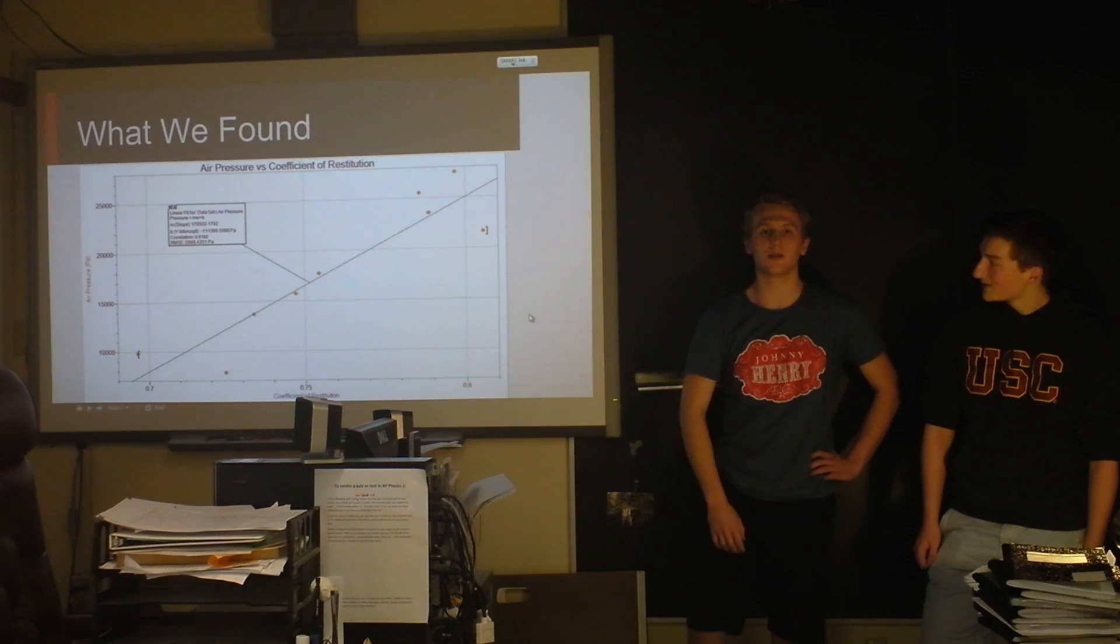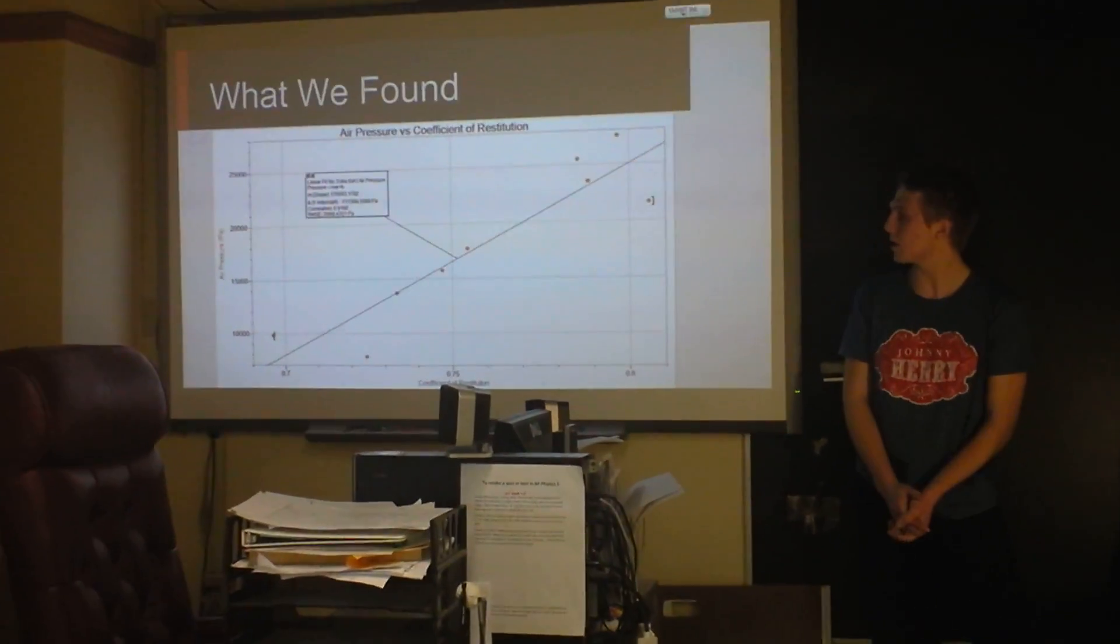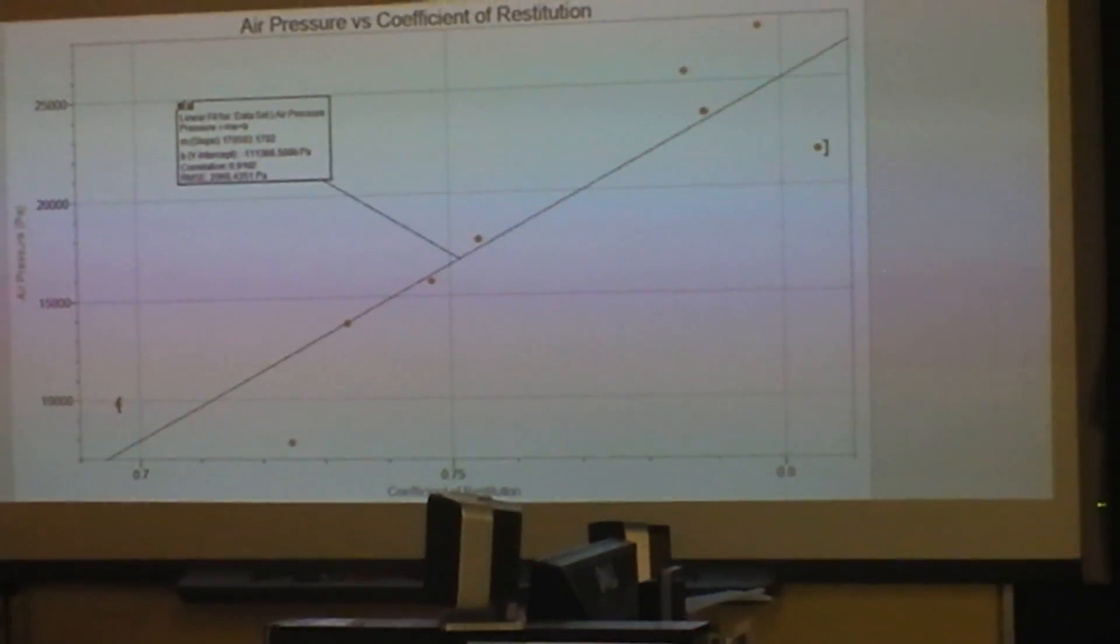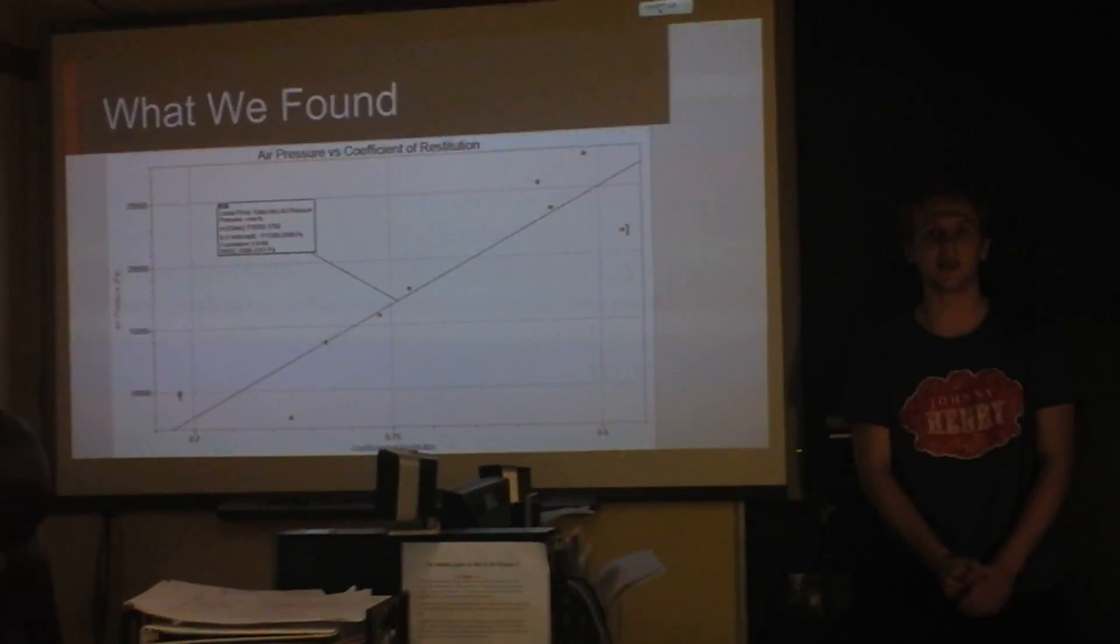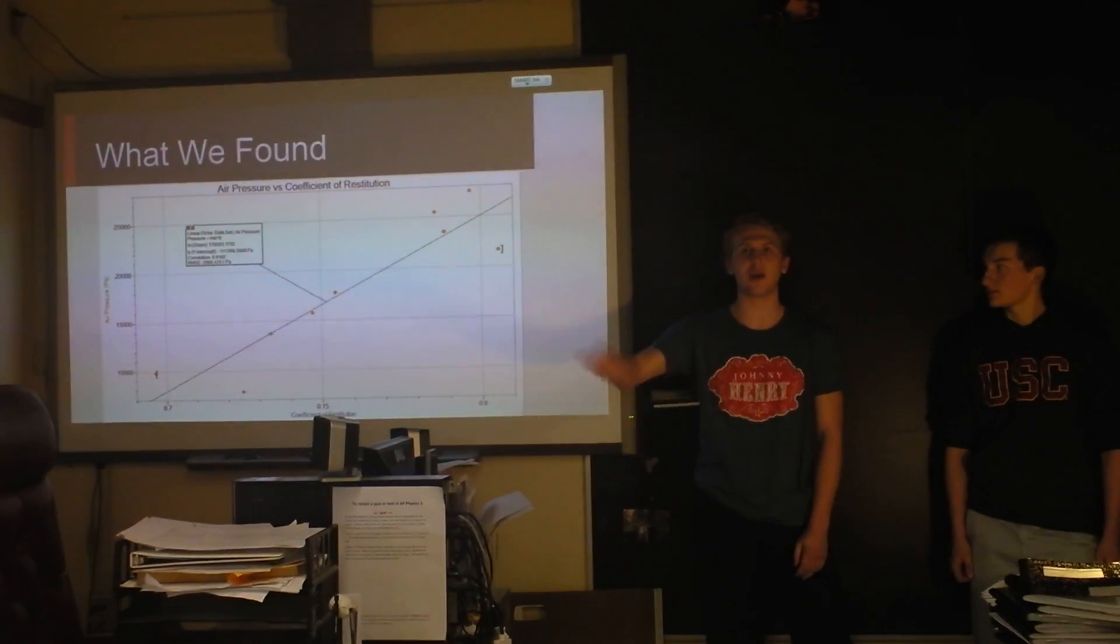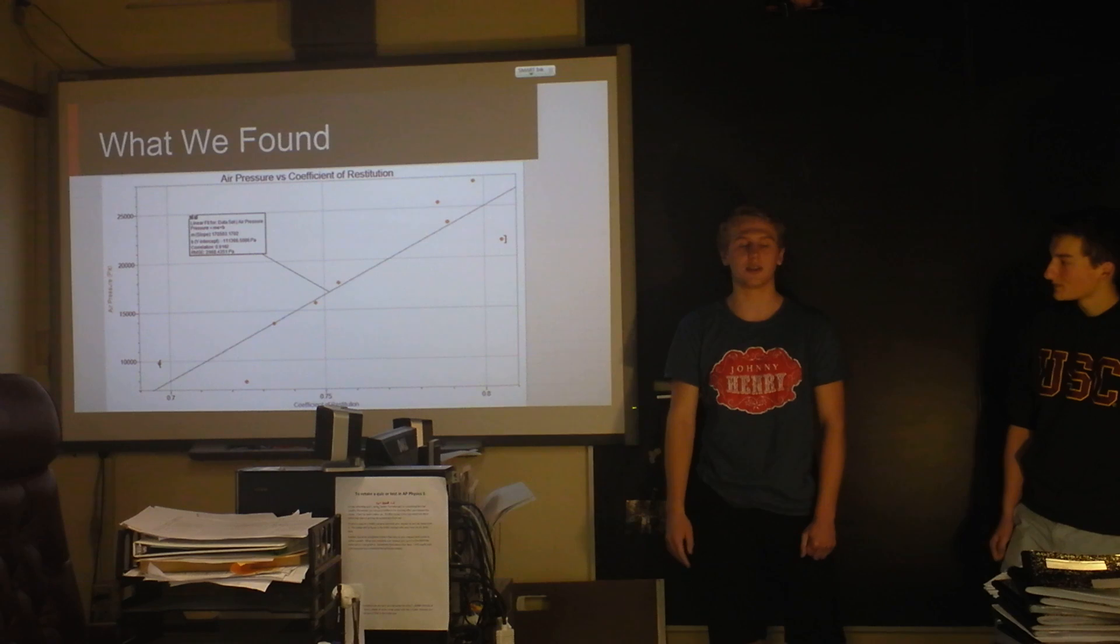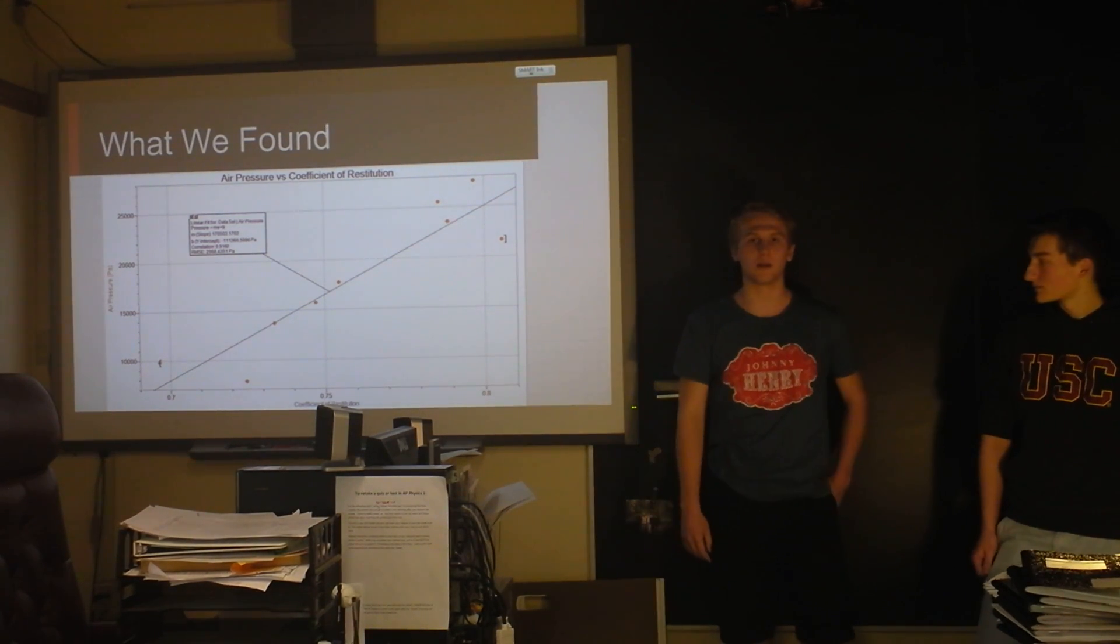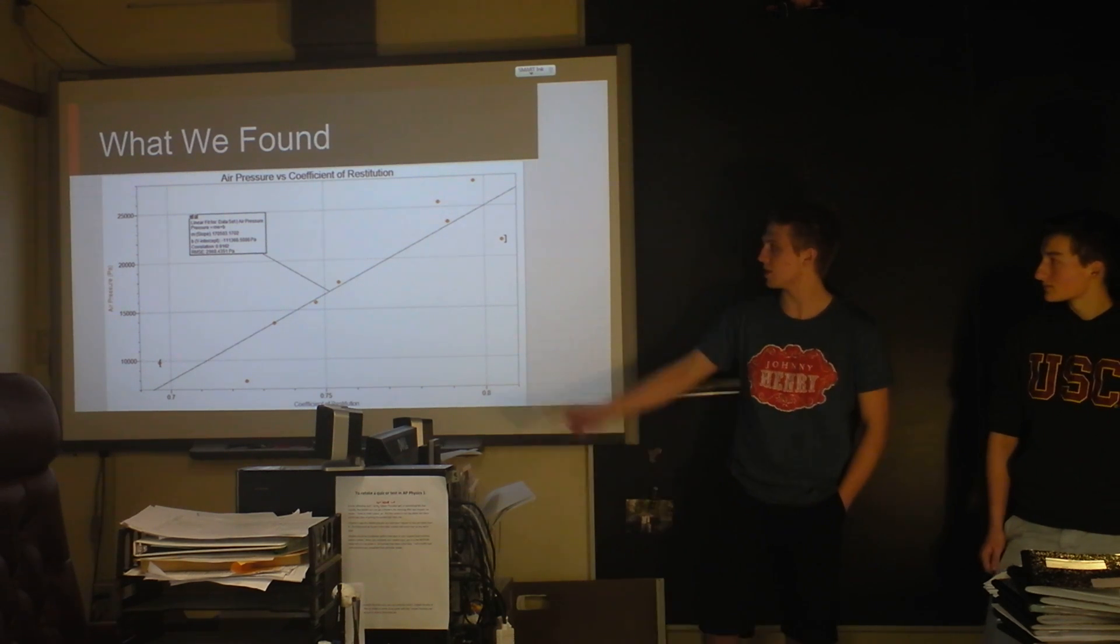Yeah, this was our result. This was the big graph. It has air pressure plotted on the y-axis. That's in pascals, which is an annoying unit to use for this because usually people use kilopascals, but pascals is the SI unit, and these are thousands of pascals. Like, 25,000 is the top over there, and it's just crazy big, and then coefficient of restitution over here, which is less than one, which made the slope ridiculous.